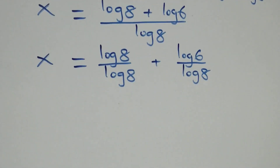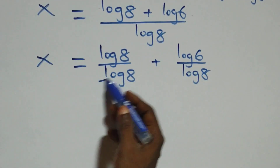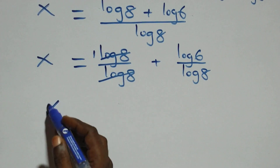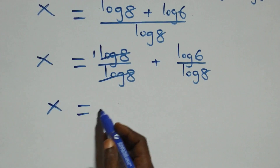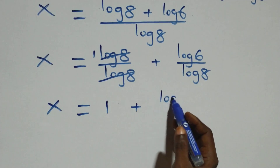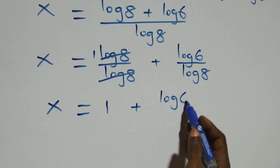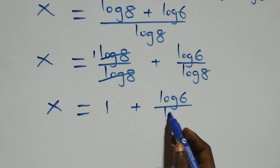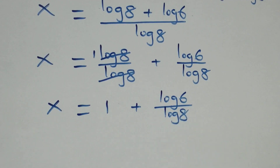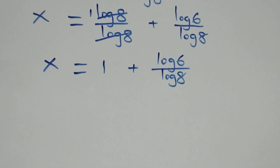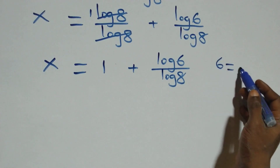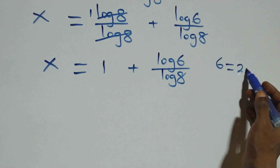As we simplify, log 8 over log 8 cancels to give 1, so x is now equal to 1 plus log 6 over log 8. Then we can also express 6 as 2 times 3.